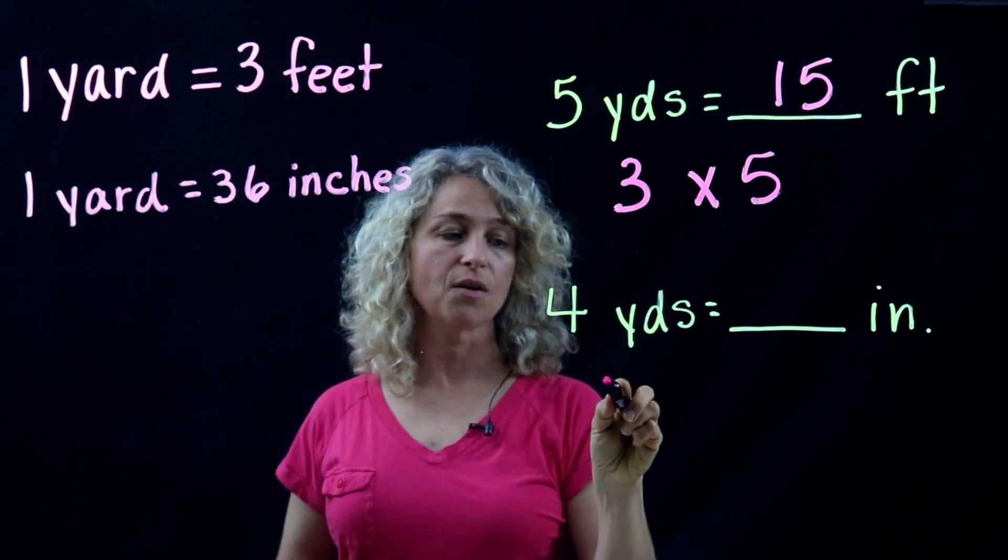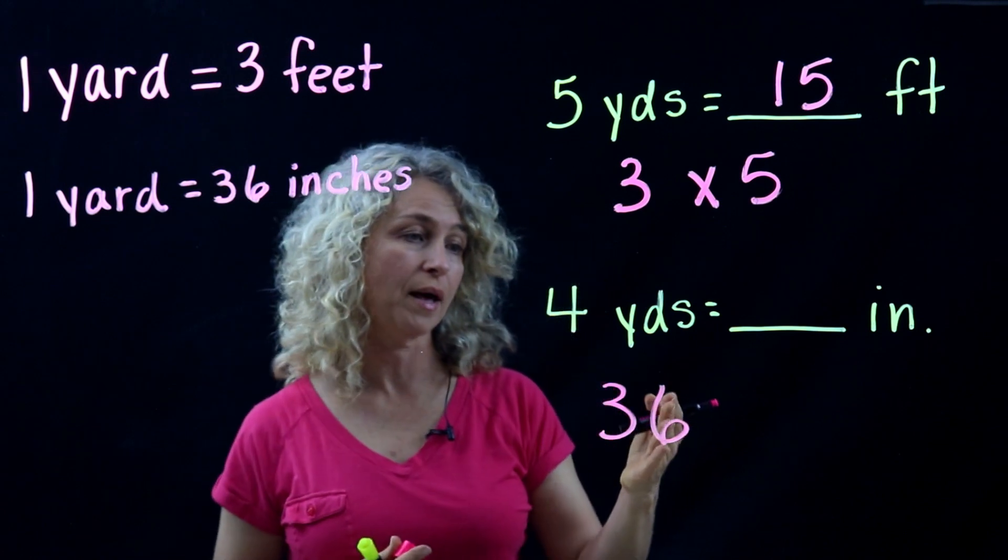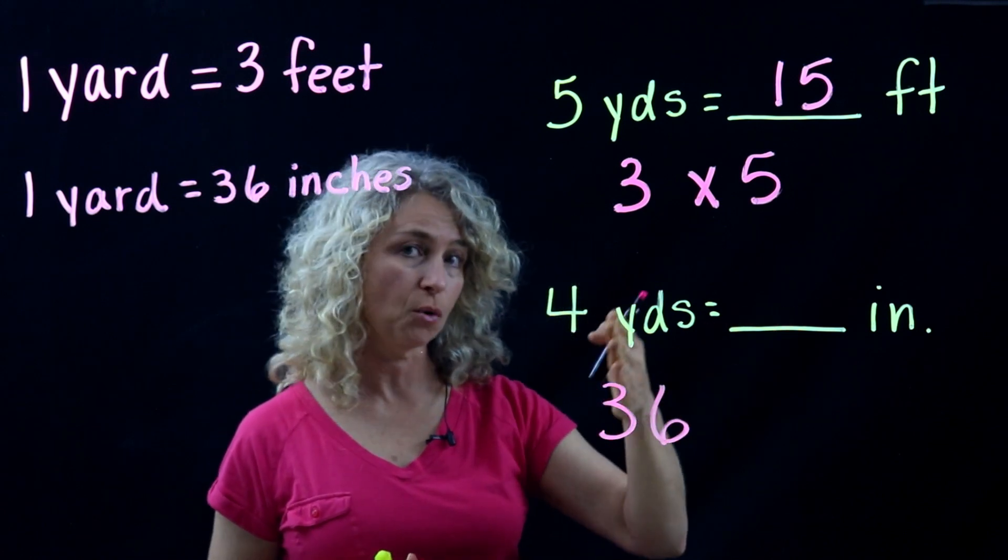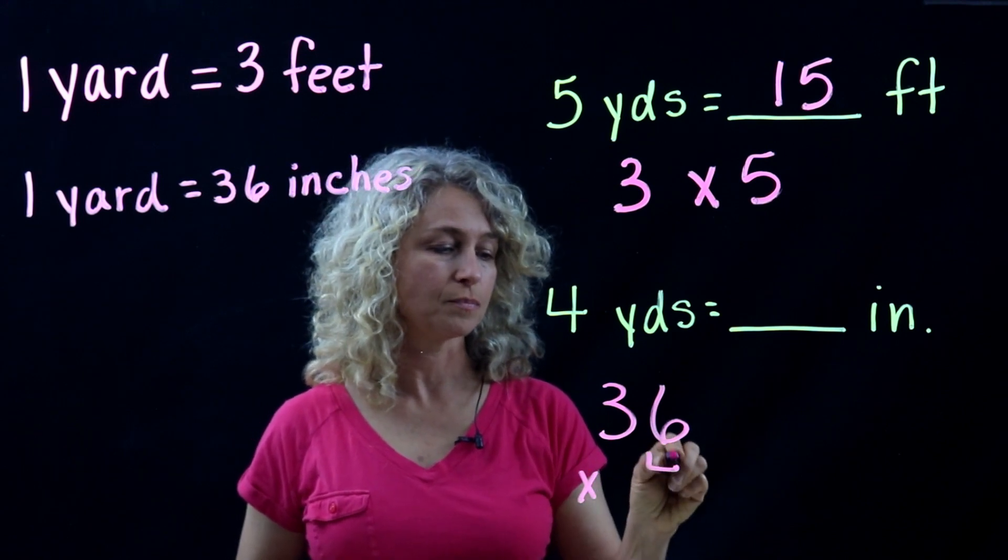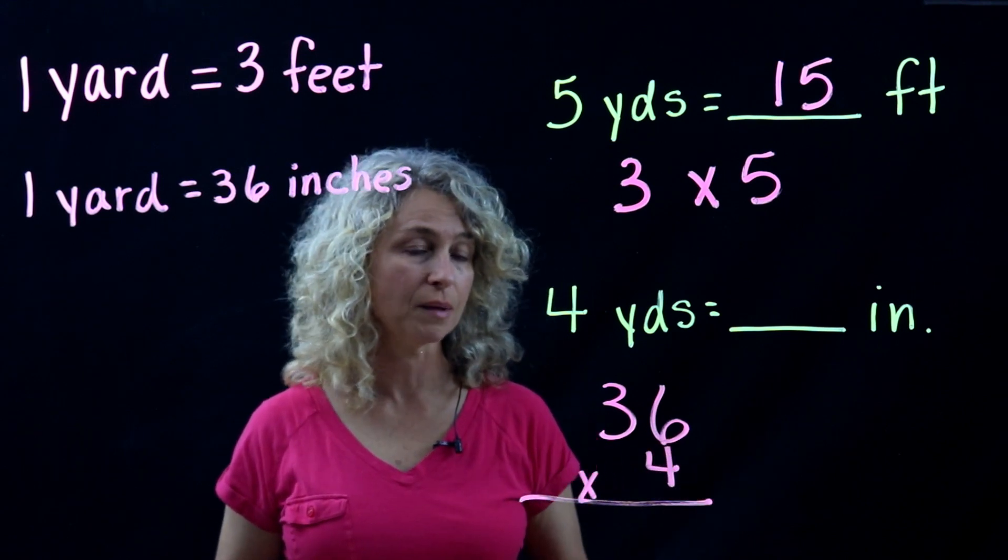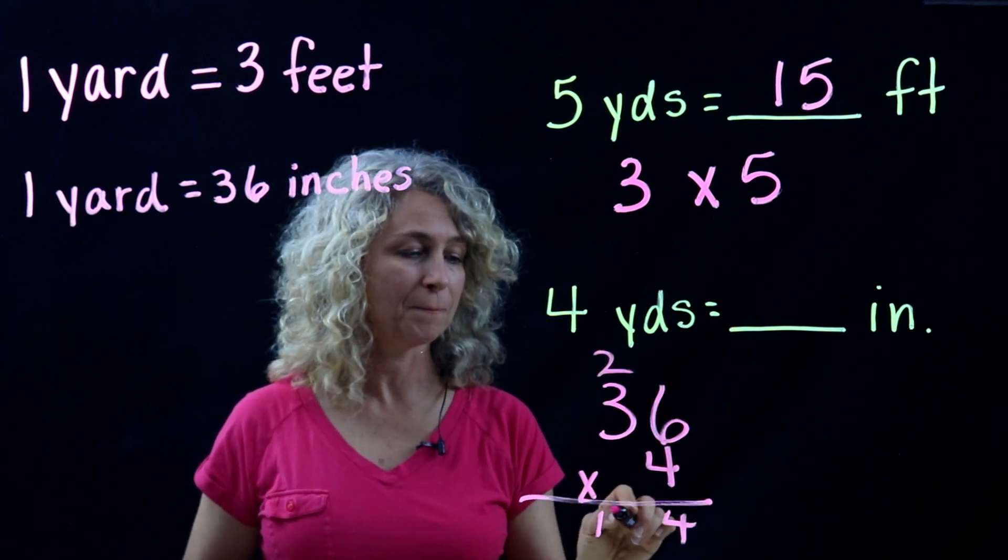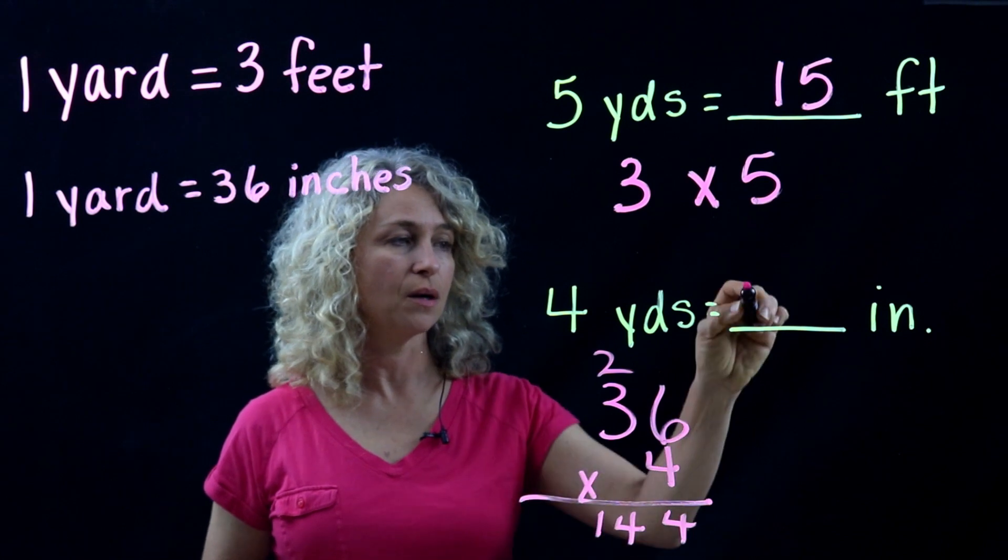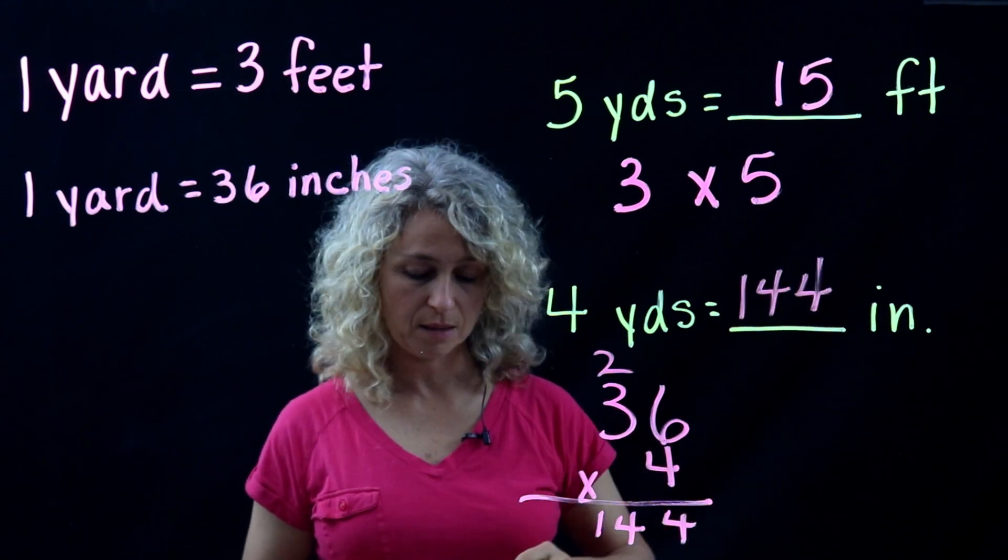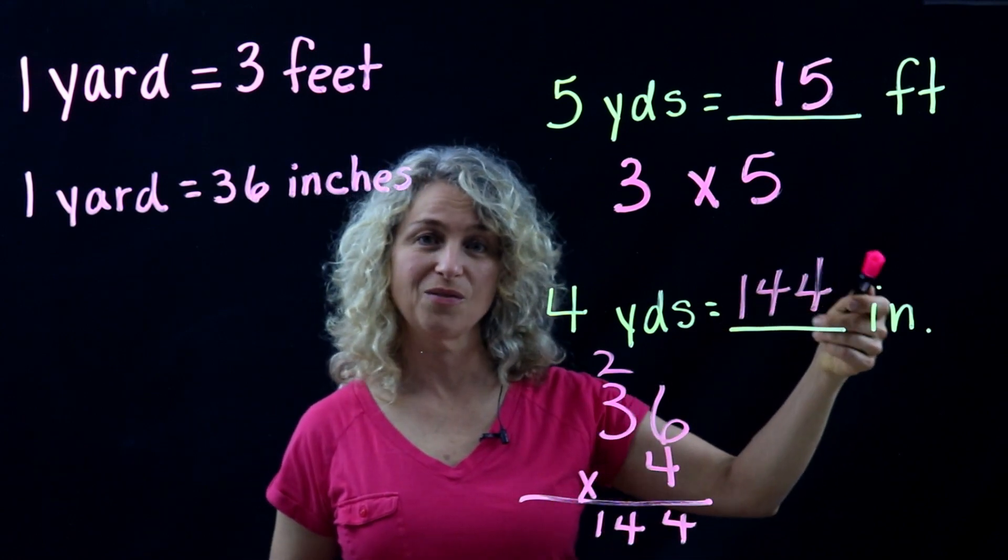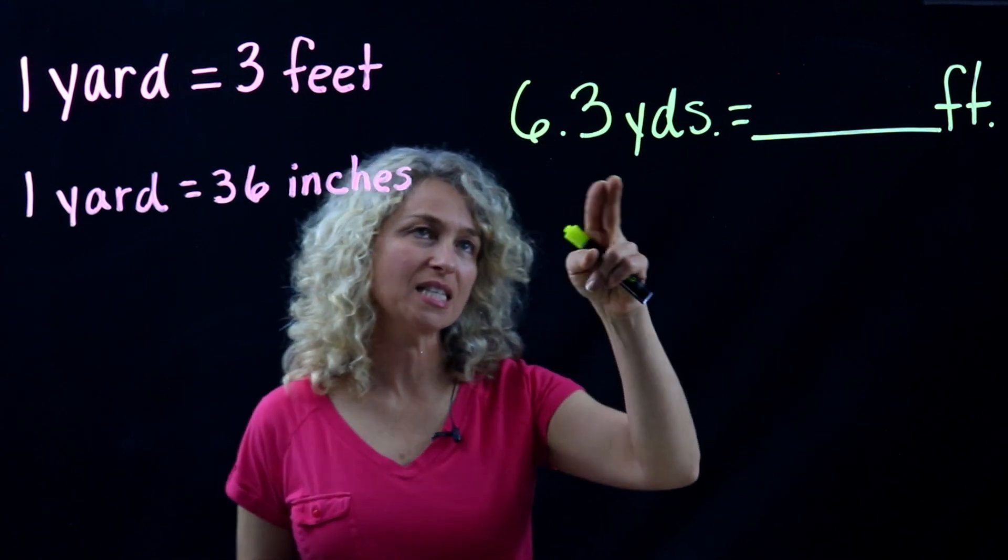The next one is yards to inches. We have 36 inches in one yard. We want to know how many inches are in four yards, so we're going to multiply times four. When you multiply times four, just do your multiplication and get your answer of 144 inches. So four yards equals 144 inches.